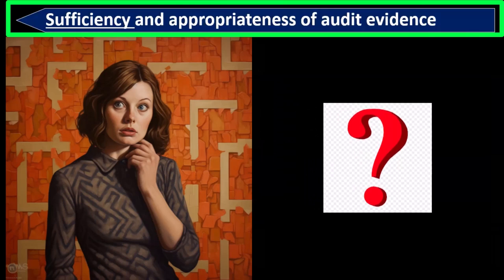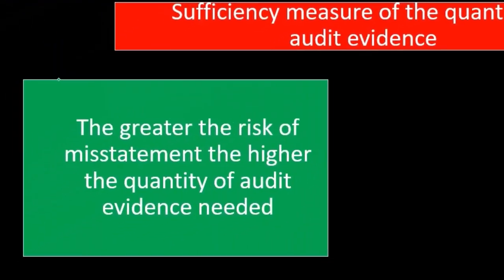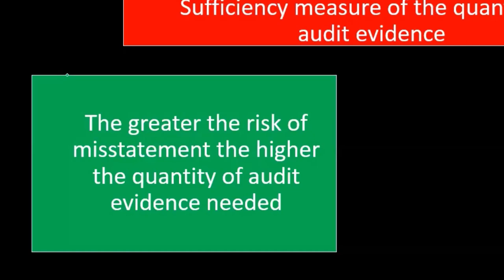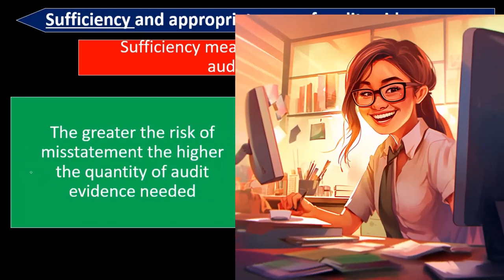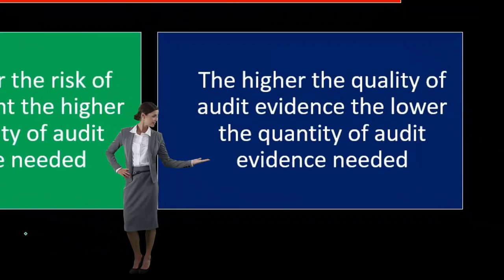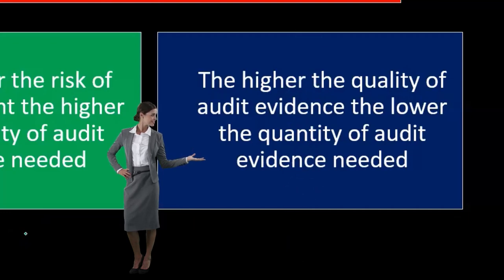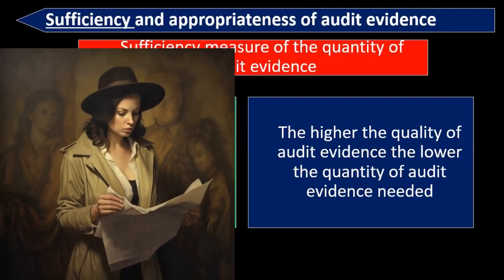Sufficiency is the measure of the quantity of audit evidence. The greater the risk of misstatement, the higher the quantity of audit evidence needed — if we're auditing something with a higher degree of risk, we mitigate that by gathering a greater quantity of evidence. Conversely, the higher the quality of the audit evidence, the lower the quantity needed, because more convincing evidence requires less of it to support our opinion.